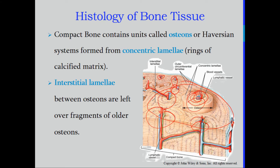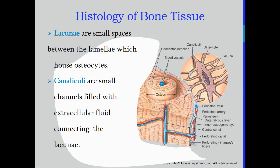The interstitial lamellae between the osteons are leftover fragments of older osteons. Think of it like stacking unsplit firewood — there are spaces between the round logs. The older osteons fill in those gaps between the round osteons, just as fill wood would between logs. That's what the interstitial lamellae represent — they fill in the gaps between the round osteons.